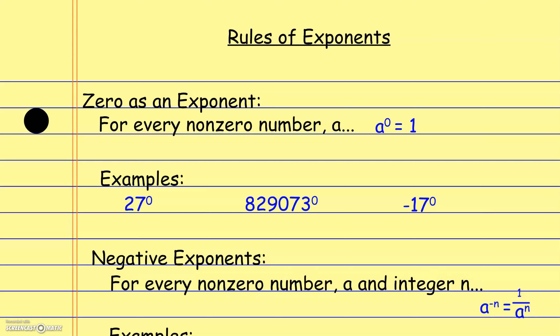Here we're looking at a review of the rules of exponents. Remember, we've got some special things that happen when we do operations involving exponents. The first is 0 as an exponent. For any non-zero number a, a to the 0 power is 1. So anything to the 0 power is essentially 1, except 0 itself — 0 to the 0 power is undefined.